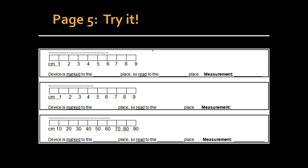Now, let's start here. This is marked to the ones. So we're going to read it to the tenths. It's a little less than halfway between. 6.2 would be a good answer. For the second one, the device is marked to the tenths place, which means we'll read it to the hundredths place. It's a little more than halfway between 0.4 and 0.5. Therefore, 0.46 would be appropriate.